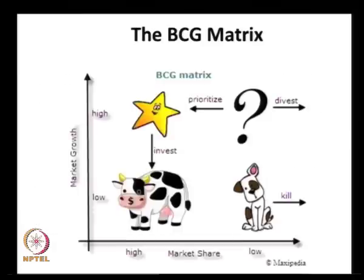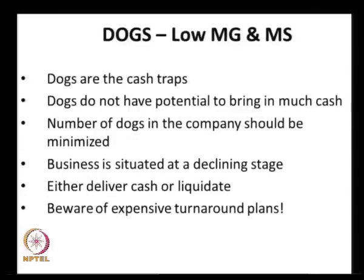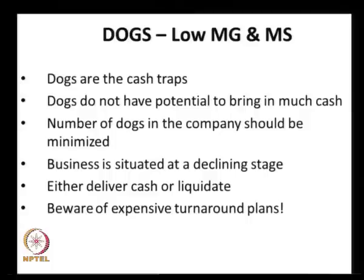Dogs have both low market share and low market growth. These are cash traps — they do not have the potential to bring in much cash. These are the types of firms that need to be eliminated by liquidating them and selling for cash. When there is no market growth and no market share, there is no point holding companies in this category. Turnaround plans should be examined cautiously for dogs, as they are fit candidates for disposal.